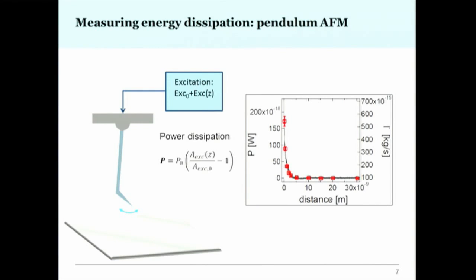The cantilever I use for both STM and AFM has a resonance around 250 kilohertz, with a very high Q factor. At 5 K, Q can reach up to around 25,000–30,000. These are commercial cantilevers, so no special preparation is needed. Depending on distance, we can measure the power dissipation. Because there is a direct relationship between the damping coefficient and dissipated power, for the rest of the slides I will use the damping coefficient as it is independent of amplitude.